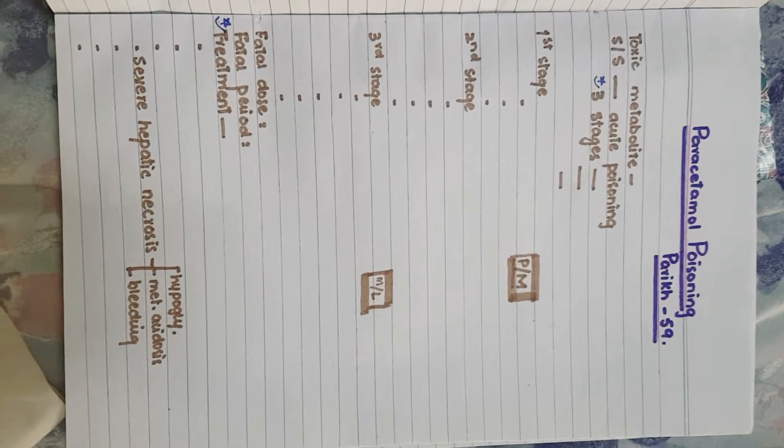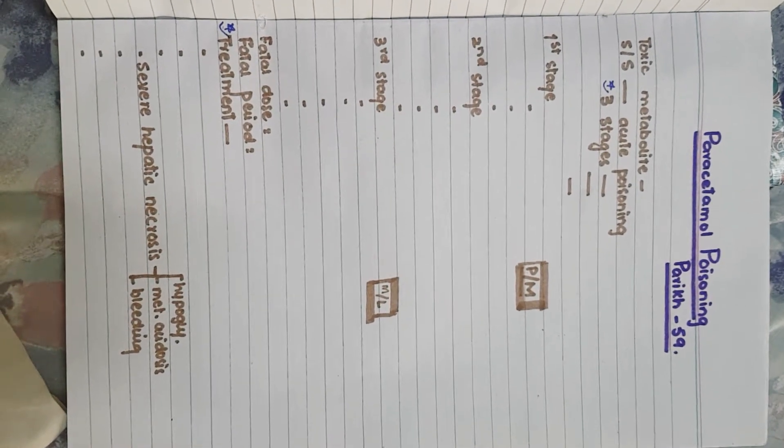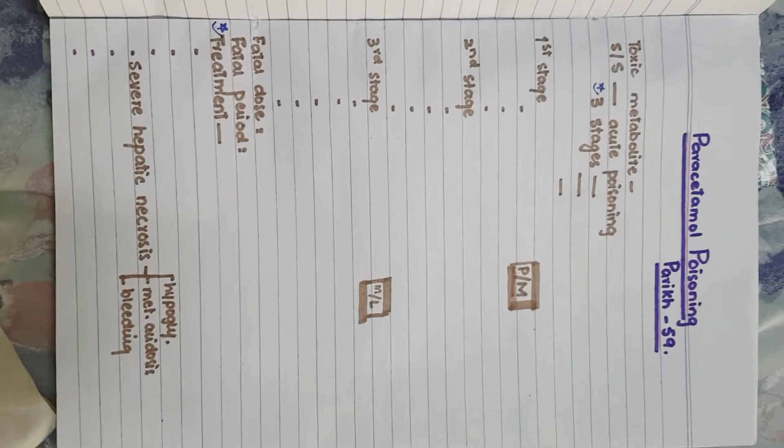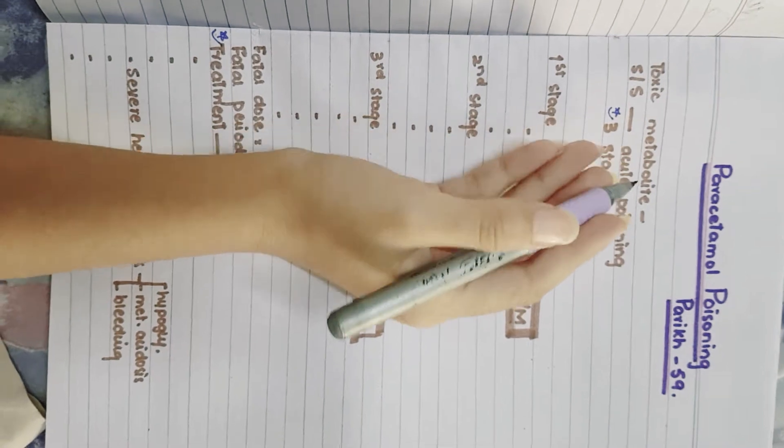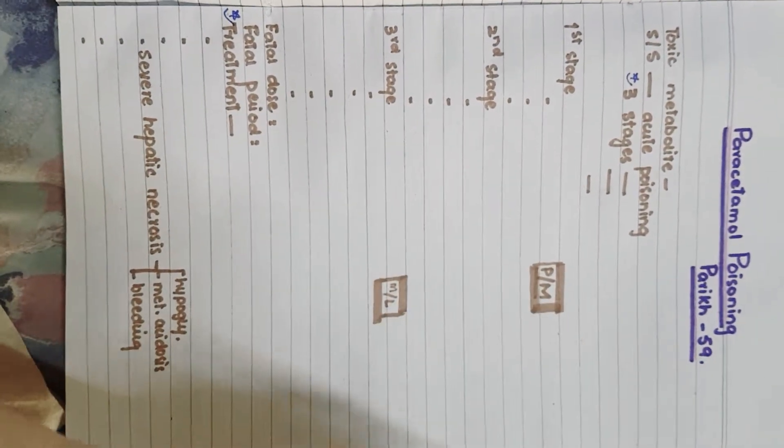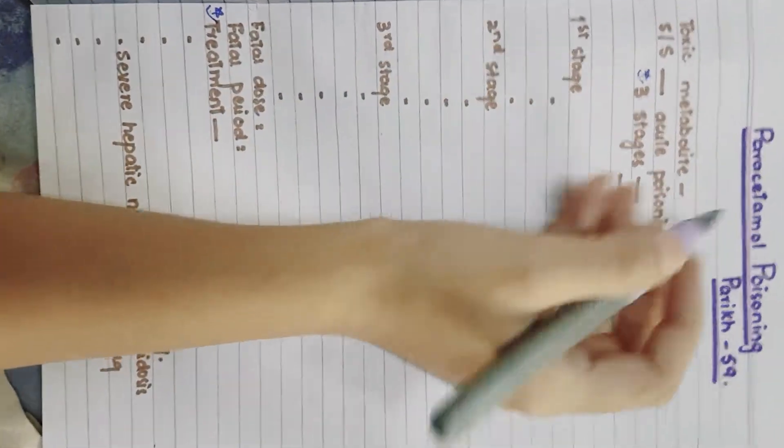Asalaamu alaykum everyone, today we are going to study paracetamol poisoning. It is taken from Parikh chapter 59. First of all, we need to know that the toxic metabolite that causes all the signs and symptoms is known as phenacetin.